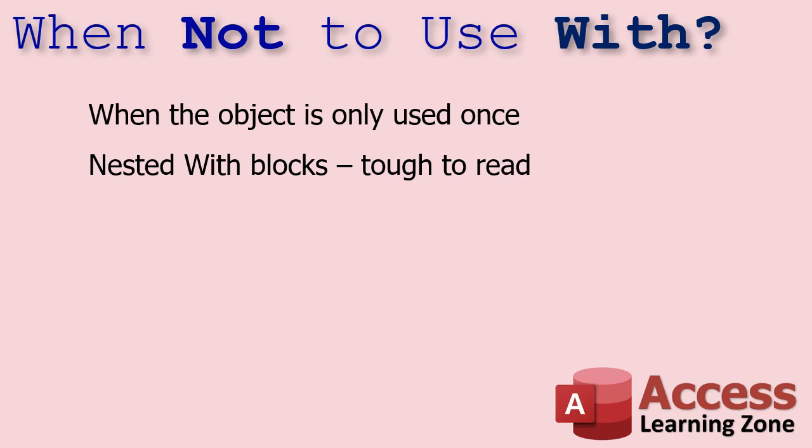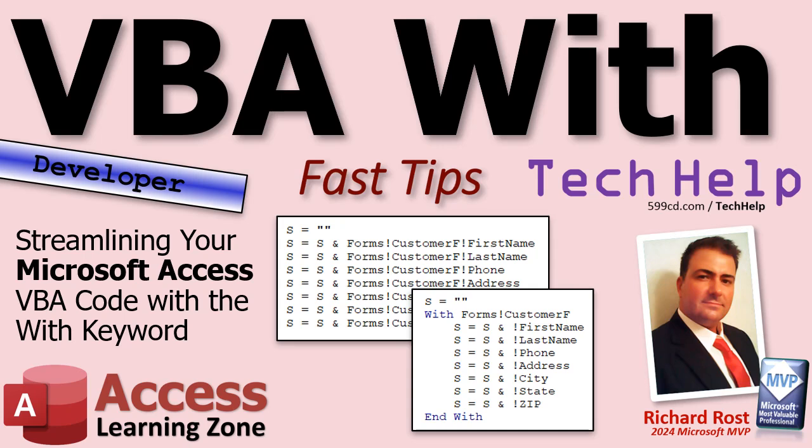When not to use With: don't bother if the object is only used once. You wouldn't say With Forms!CustomerF if you're only using FirstName, or even just FirstName and LastName — that's up to you. I personally don't like nesting With blocks. You can nest With inside each other, but I never do that because it gets really confusing — the most recent With takes over. Just use it for one thing at a time.